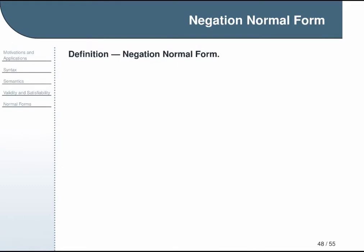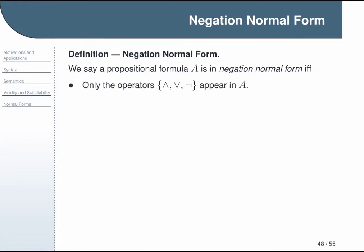Now for our first actual normal form, we will start with negation normal form. A formula A is considered to be in negation normal form if and only if two things are true. First, only the operators and, or, and not are allowed to appear in the formula A.